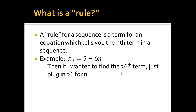So if I wanted to find the 26th term, I would just plug in 26 for n. If I was making a list and I wanted to find the 26th thing on the list, all I would need to do is make n equal to 26 and plug it into this rule. So a sub 26 is equal to 5 minus 6 times 26. All a sub 26 means is the 26th term of the sequence, and a sub 26 is negative 151.